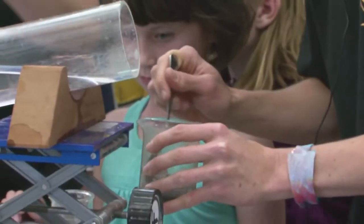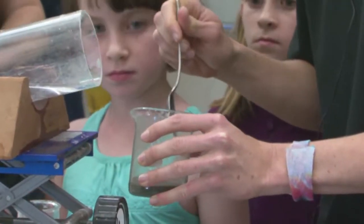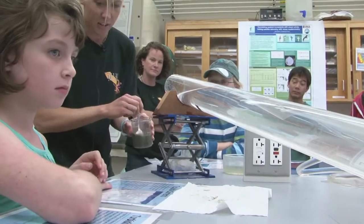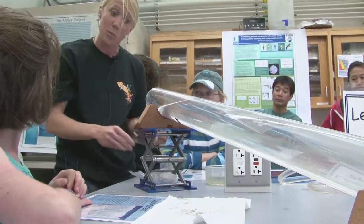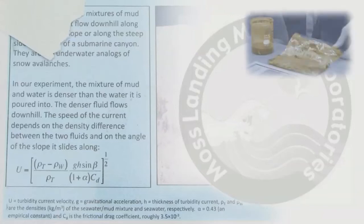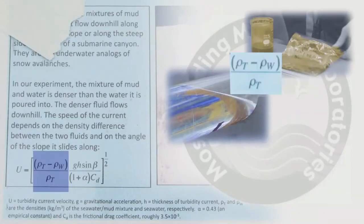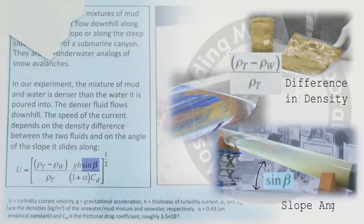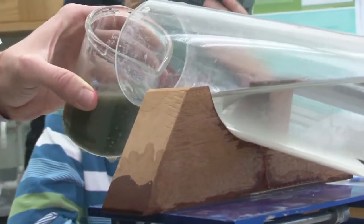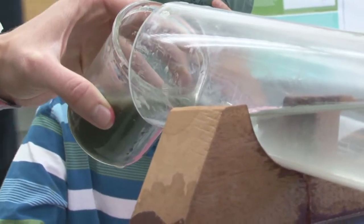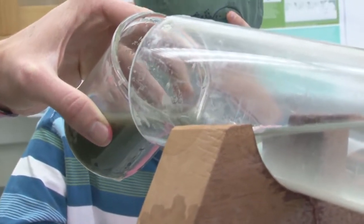Now we're going to watch how this develops and try to know how fast it goes. The speed at which these currents flow is dependent on a few different things: the density difference between the sediment slurry and the surrounding water, and also the slope angle that it's traveling against. So let's go ahead and set this off — we're going to imagine an earthquake occurring setting off this flow.